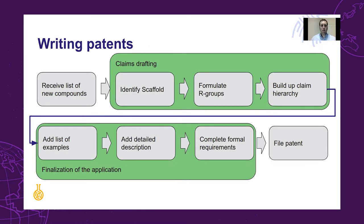The process has multiple complex steps, starting usually with receiving a list of new compounds. The IP professional needs to identify a scaffold, formulate R-groups, and build up a claim hierarchy. After that, you need to formulate the list of examples, add a detailed description, complete additional formal requirements, and file the patent application. This is only the beginning — prosecution with the patent office and post-grant communication are also needed.